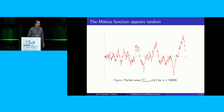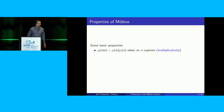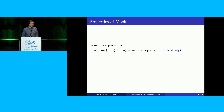Let me state a few key properties. First, it's easy to verify that the Möbius function is multiplicative, meaning that mu of mn equals mu of m times mu of n whenever m and n are coprime. In fact, the Möbius function is perhaps the most important example of a multiplicative function.